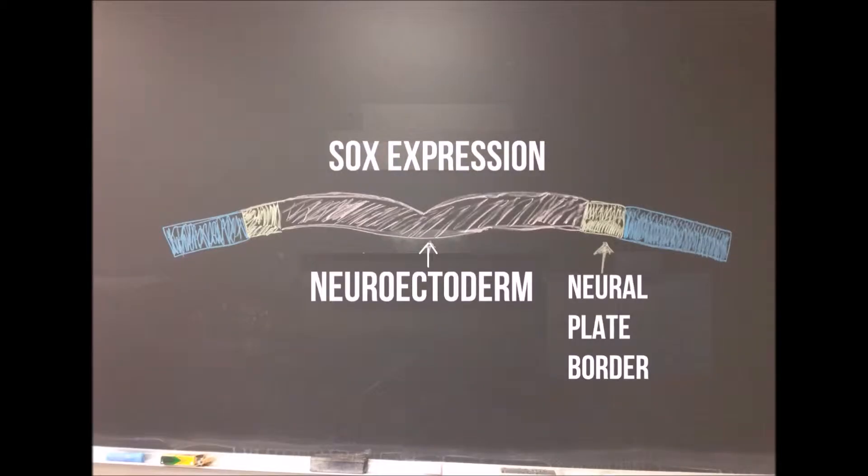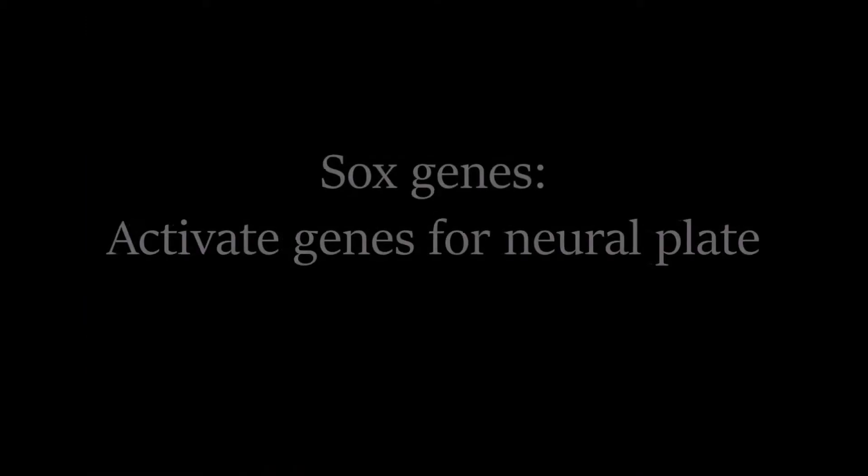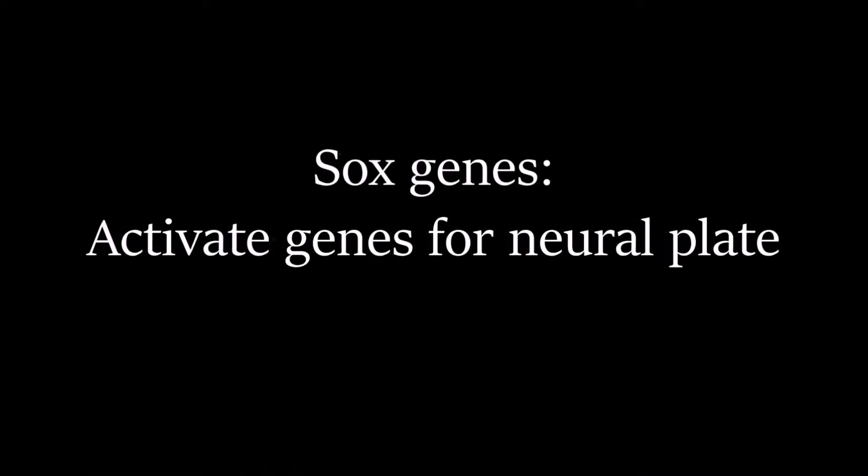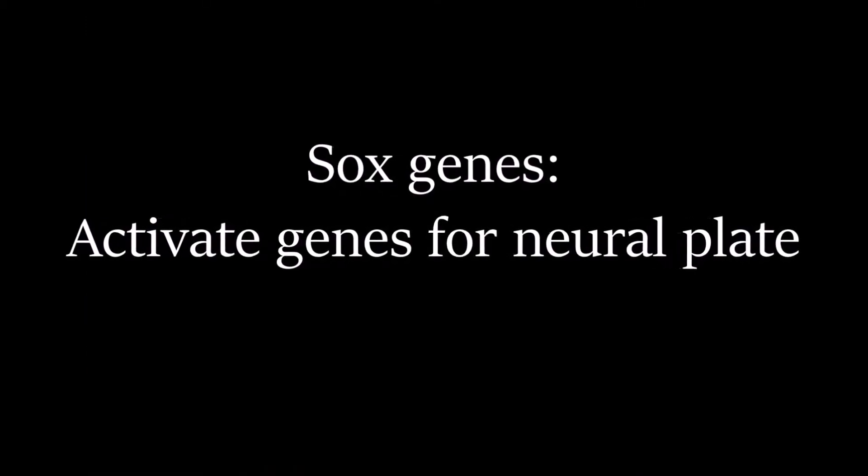Neurulation is a necessary process to internalize the central nervous system of vertebrates. First, neural plate cells proliferate, thickening to form the neural fold. This proliferation is under control of SOX genes.